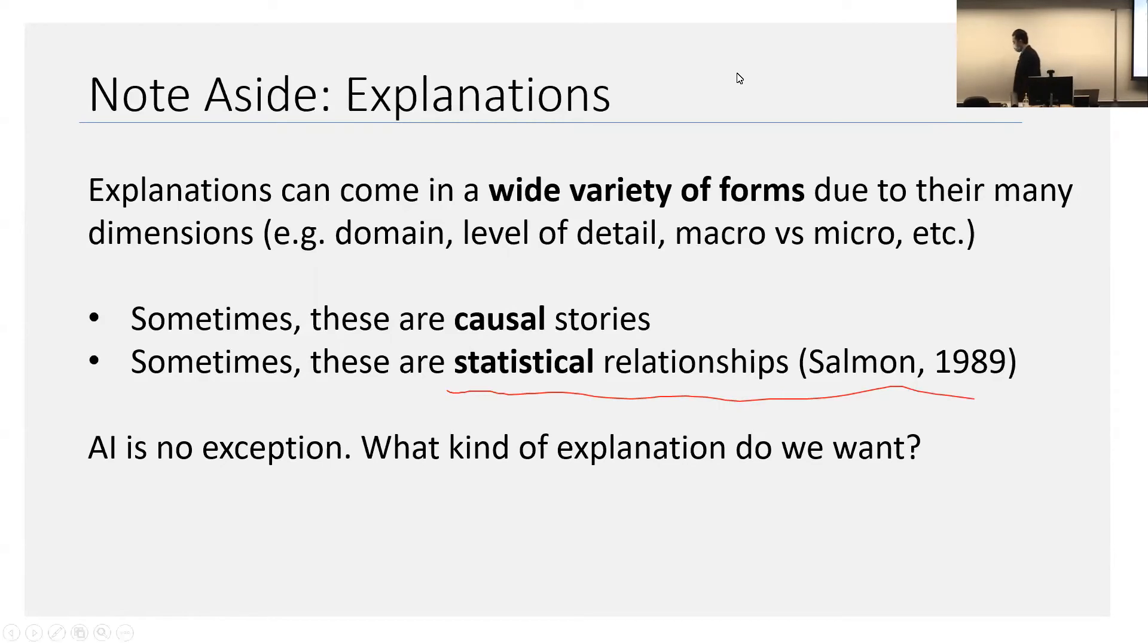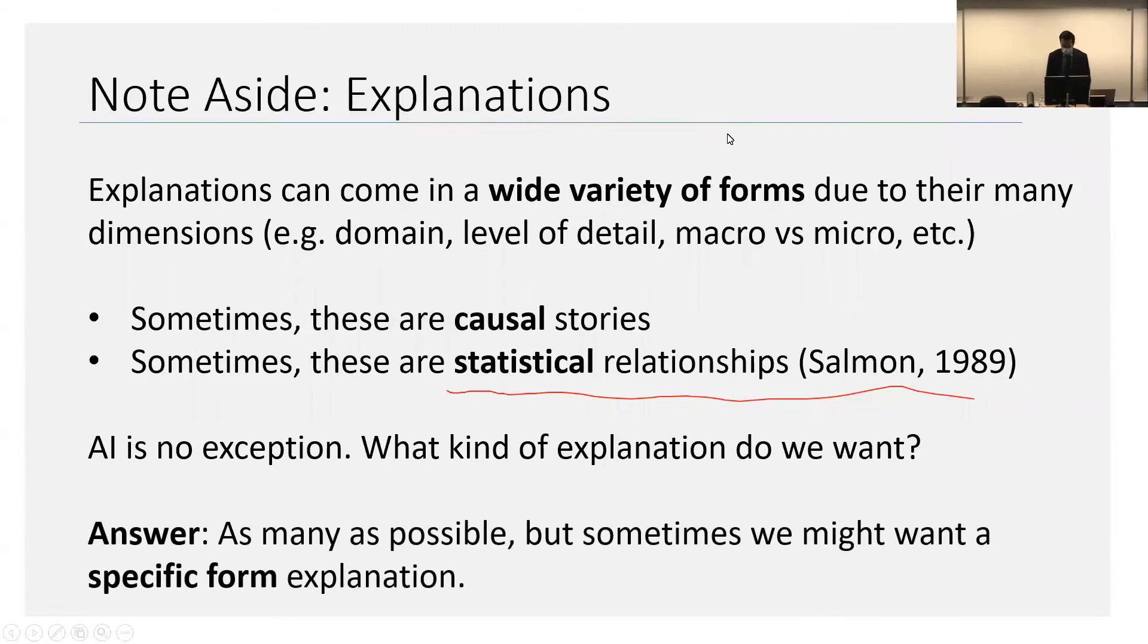Now, given that there's so much variety in explanations, AI is really no exception. We do want an explanation, but there's a lot of variety in what kind of explanation we can give. But in general, we do want as many as possible. But sometimes we might have to settle for a specific form, specific type, or specific part of an explanation.